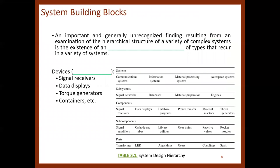Knowing the hierarchy of systems, we can talk about the system building blocks. An important and generally unrecognized finding resulting from an examination of these hierarchical structures of a variety of complex systems is the existence of an intermediate level of elements that recur in a variety of systems. We can recognize that there are intermediate-level elements that are repeated and present in most systems development.